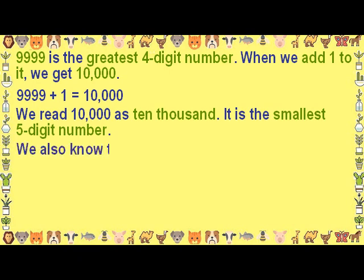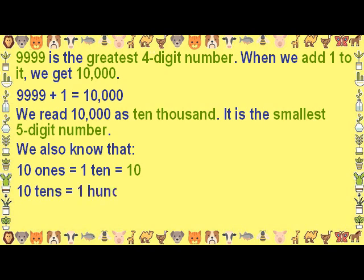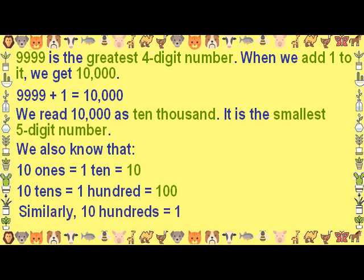We also know that 10 ones is equal to 10, which is the smallest 2-digit number. 10 tens is equal to 100, which is the smallest 3-digit number. Similarly, 10 hundreds is equal to 1000, which is the smallest 4-digit number.